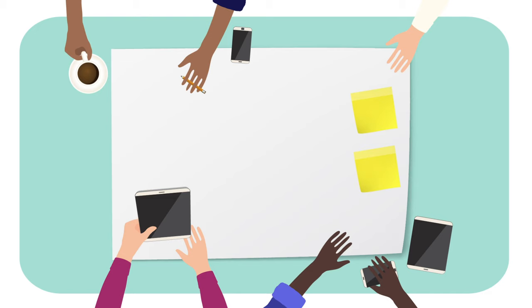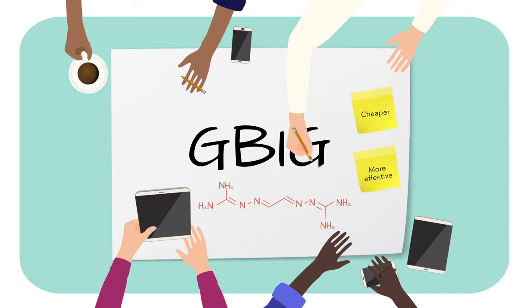Dr. Kastelsian then explored other BIG compounds that are cheaper and more effective. In one study, his team explored GBIG, one of the simplest BIG compounds.